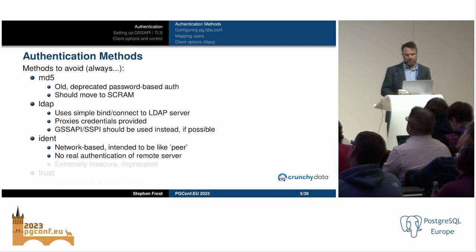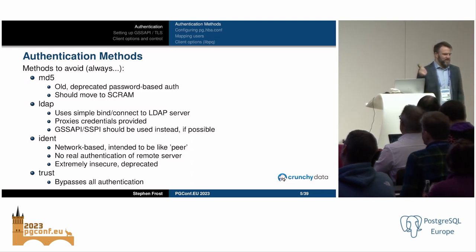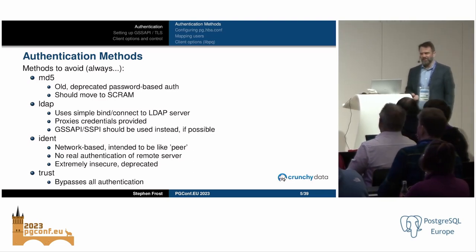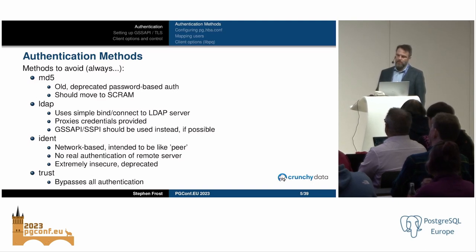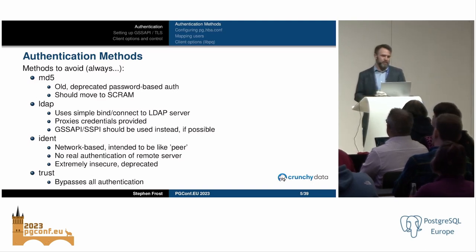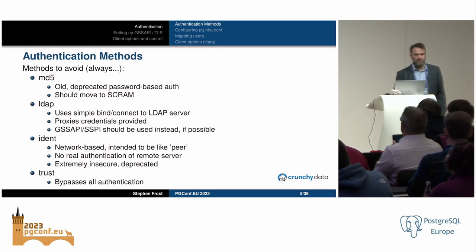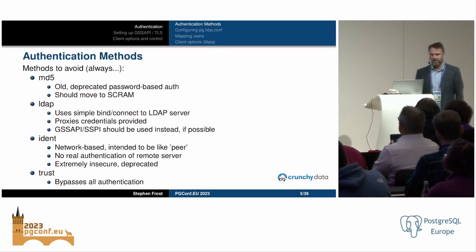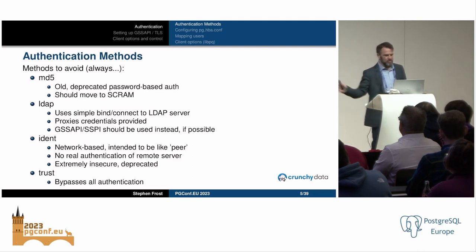IDENT is ancient and nobody should be using it. And don't use trust — a lot of people think trust is secure, but no. Trust is basically a developer hack inside of Postgres. It should not even be compiled into the binary, in my opinion, because it just bypasses all authentication.